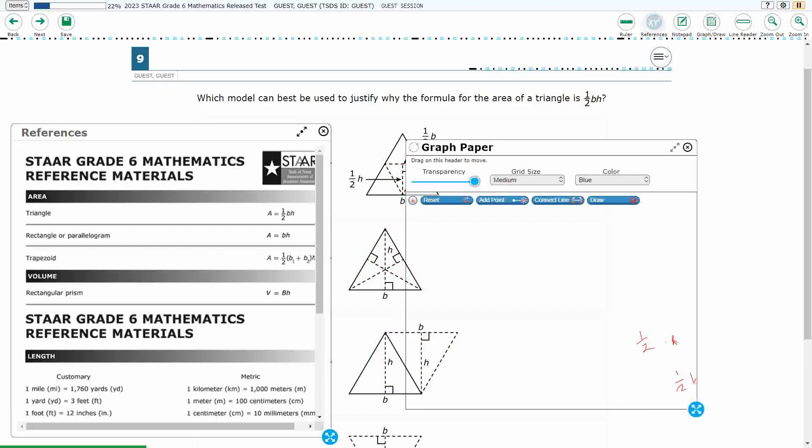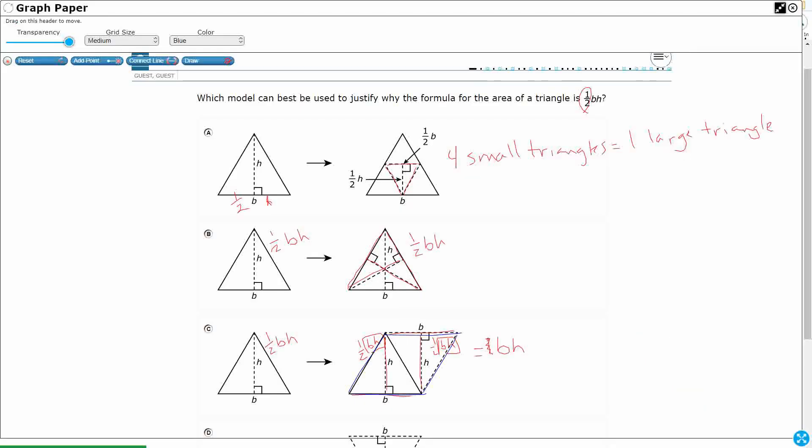And take a look what we find in our reference materials. Rectangle or parallelogram, area equals base times height. So we're used to a rectangle, right, as being base times height. Base times height, that's the area.